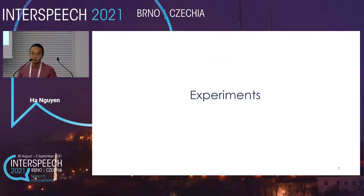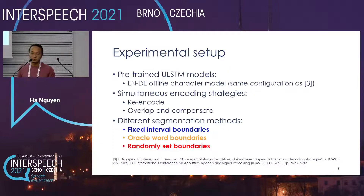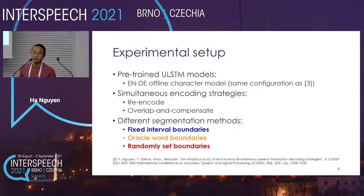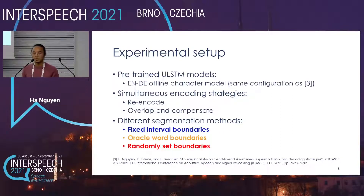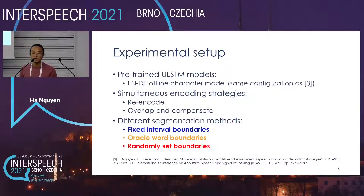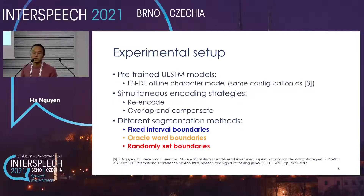Going into the experiments: we pre-trained an offline English-to-German model using a unidirectional LSTM speech encoder, with the same configuration as our previous work, only replacing bi-directional LSTM layers with unidirectional ones. We compare the overlap-and-compensate encoding strategy with the re-encode strategy from our previous work, and also investigate the impact of different segmentation methods on the performance of the online translation system.